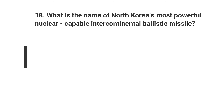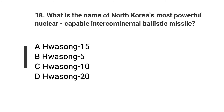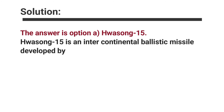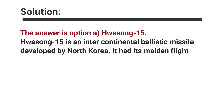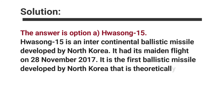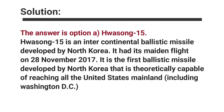Question number eighteen: What is the name of North Korea's most powerful nuclear-capable intercontinental ballistic missile? Options are A. Hwasong-15, B. Hwasong-5, C. Hwasong-10, D. Hwasong-20. The answer is option A, Hwasong-15. Hwasong-15 is an intercontinental ballistic missile developed by North Korea. It had its maiden flight on 28 November 2017. It is the first ballistic missile developed by North Korea theoretically capable of reaching all of the United States mainland, including Washington D.C.